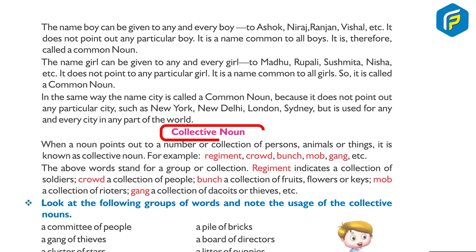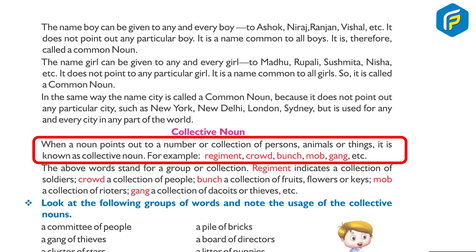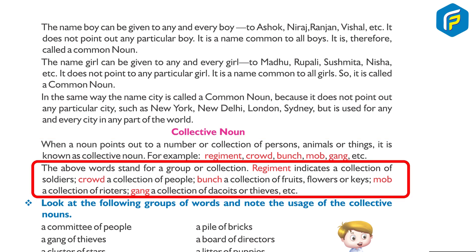Collective noun: when a noun points out to a number or collection of persons, animals or things, it is known as a collective noun. For example: regiment, crowd, bunch, mob, gang, etc. These words stand for a group or collection. 'Regiment' indicates a collection of soldiers; 'crowd' a collection of people; 'bunch' a collection of flowers, fruits or keys; 'mob' a collection of rioters; 'gang' a collection of dacoits or thieves.